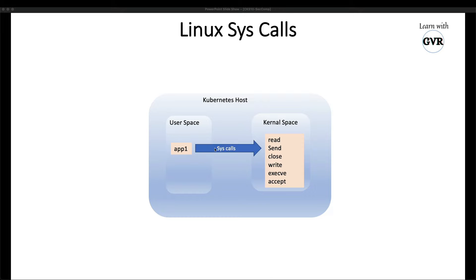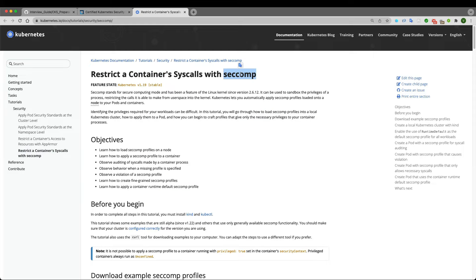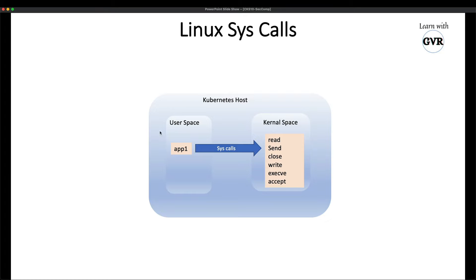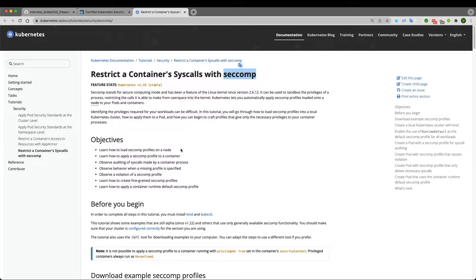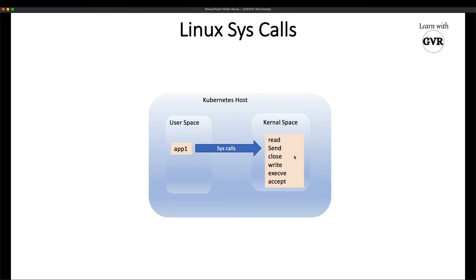There are hundreds of thousands of syscalls. When you click something or perform an action, many syscalls are made internally. The main purpose of seccomp is to restrict container syscalls. If you don't restrict advanced syscalls, an application may compromise your system. In Kubernetes, everything is a container — a pod makes syscalls and could potentially hack the machine.